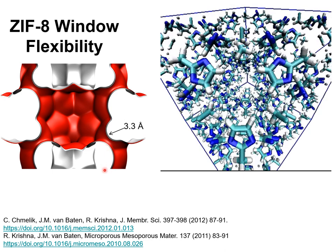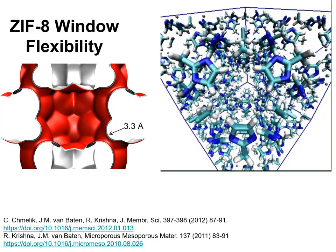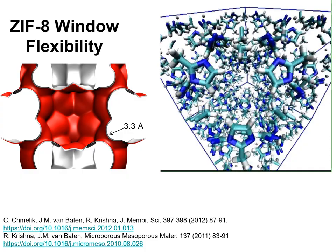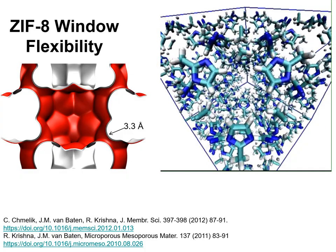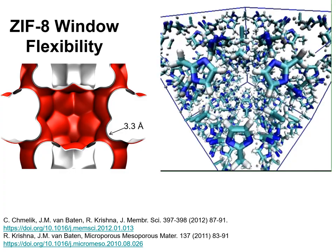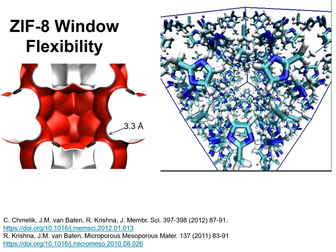I would like to show you animations of the window flexibility obtained by molecular dynamic simulations. What you are going to look at is a view along this direction. We see that the window of ZIF-8 is flexible and it opens and shuts like a saloon door in the Quentin Tarantino movie, The Hateful Eight. This window flexibility allows molecules larger than 3.3 Angstrom to cross the windows.